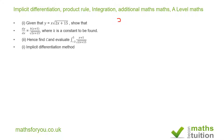For the product rule approach, you have to remember that the square root of 2x plus 15 can be written as 2x plus 15 raised to the power of one half. That's going to be your starting point.